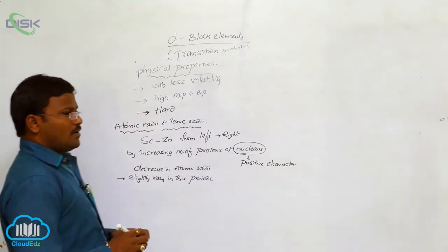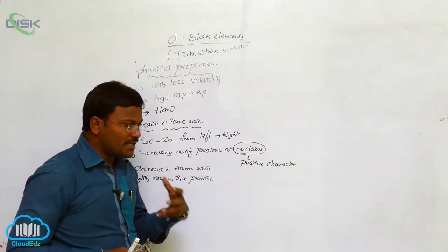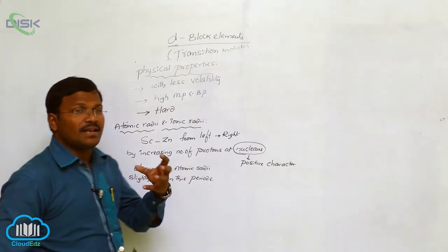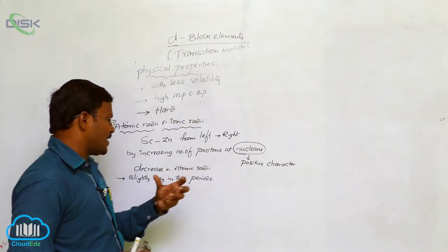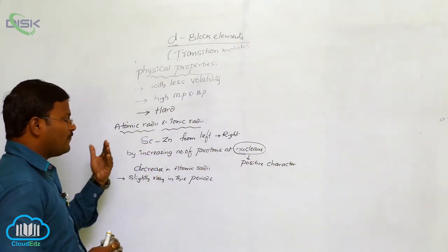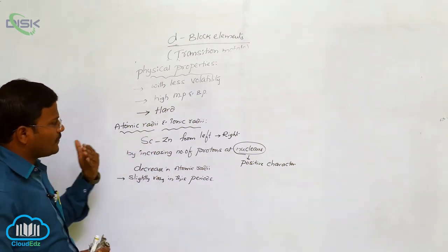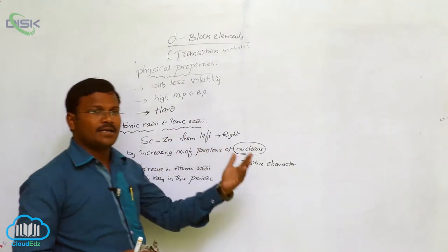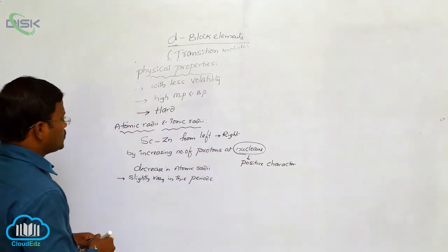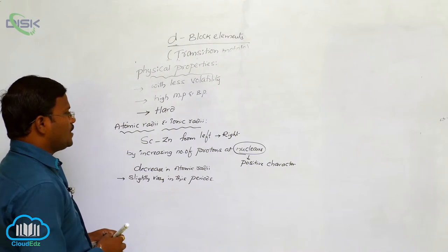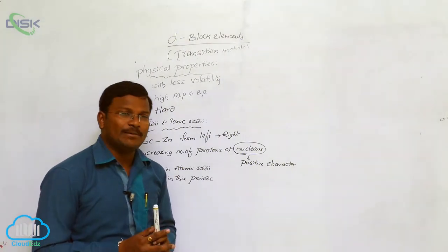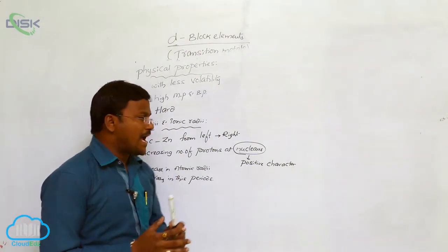Sometimes a high decrease in atomic radii is observed, and sometimes less decrease is observed while moving from scandium to zinc — that is, from left to right in the D-block elements. This applies to atomic radii. As for ionic radii, since these are metals with more electropositive character, electrons can be eliminated from the valency orbit using some amount of energy called ionization enthalpy.